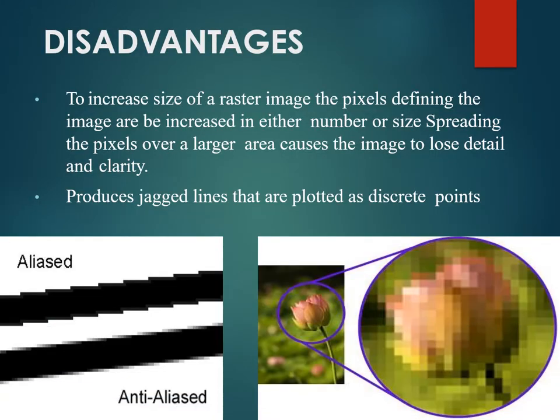Disadvantages of raster scan systems: to increase the size of a raster image, the number of pixels must be increased; spreading pixels over a larger area causes the image to lose detail and clarity. Rasters can also produce diagonal lines that appear as discrete points, giving a jagged appearance. Advantages include producing realistic images with different colors and shadow effects.